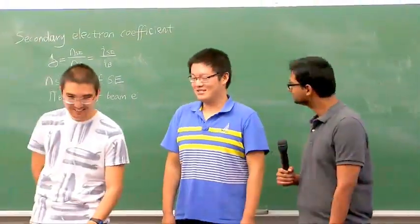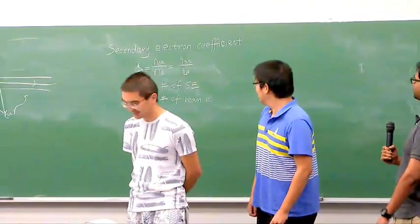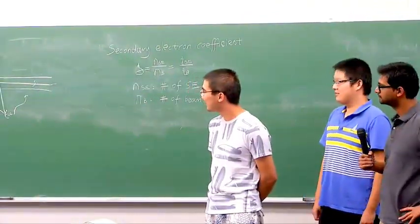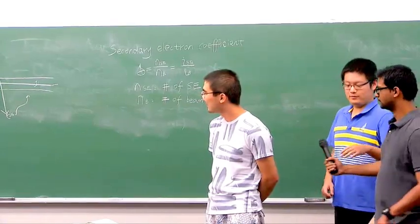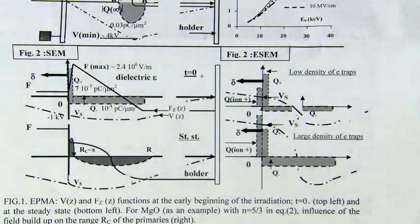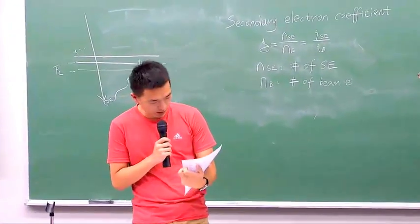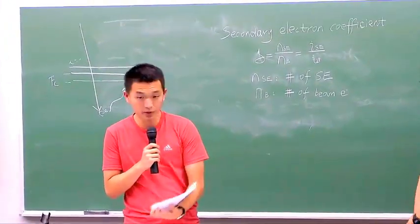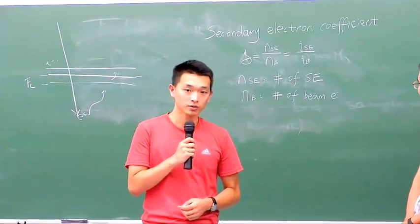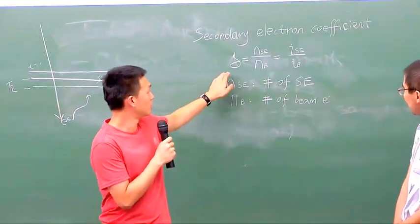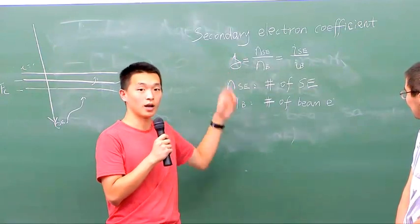On the board, the parameter theta represents the secondary electron ratio. For EPMA, SEM, and ESEM, they are detectors of secondary electrons, so we chose this parameter to characterize our electron interactions. The definition tells us the ratio of secondary electrons produced.